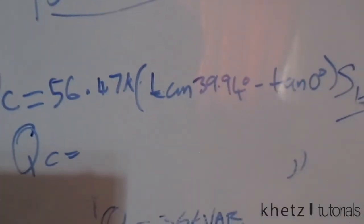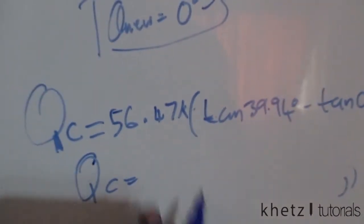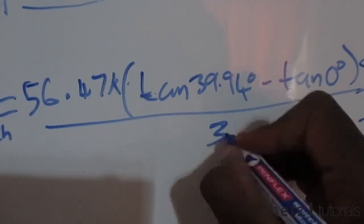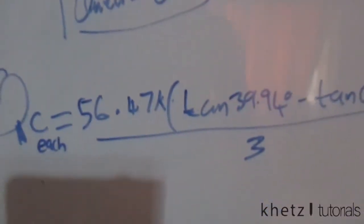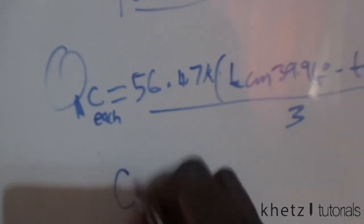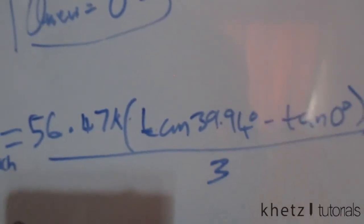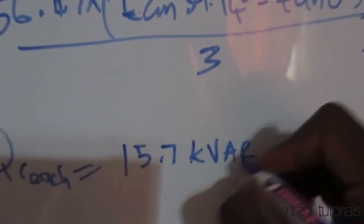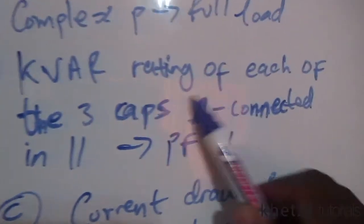This gives the total capacitor rating. Since the question asks for the rating of each of the three delta-connected capacitors, we divide the total by three. The answer for the rating of each capacitor is 15.7 kVAR.